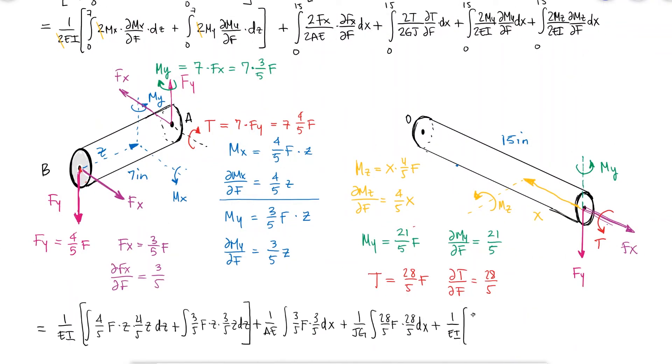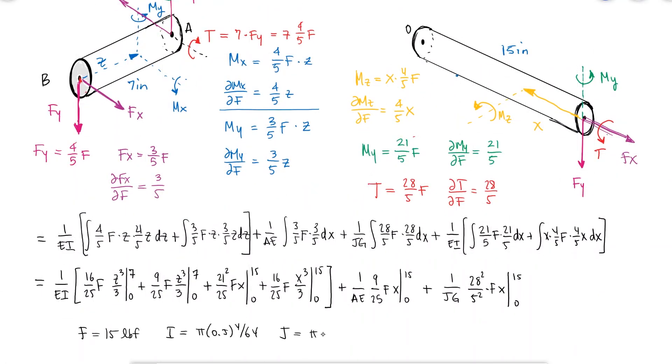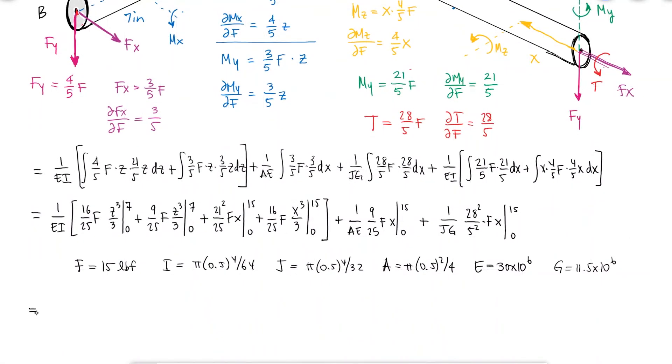Substituting all of the values and carrying out the integrals and knowing the values for F, I, J, A, E, and G, we find that the deflection of B in the direction of F is 0.279 inches.